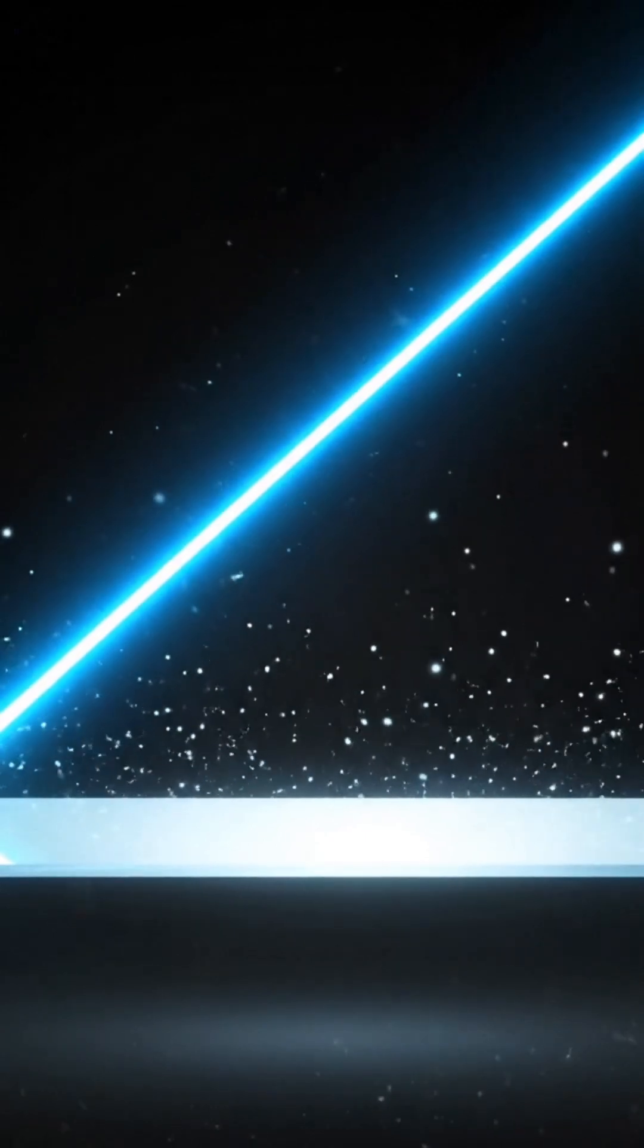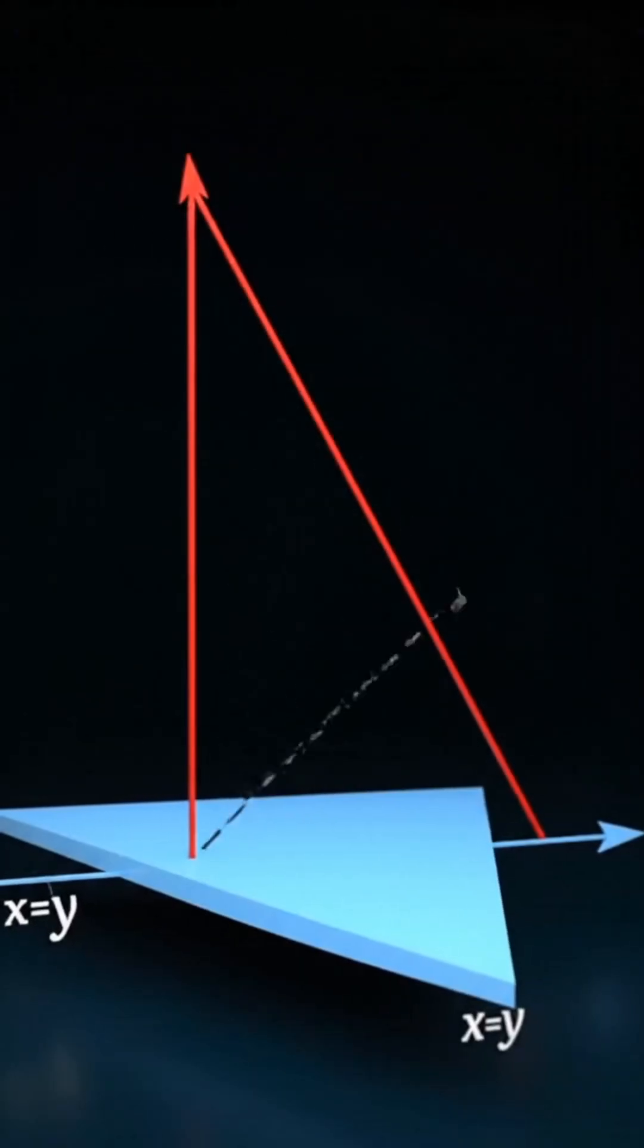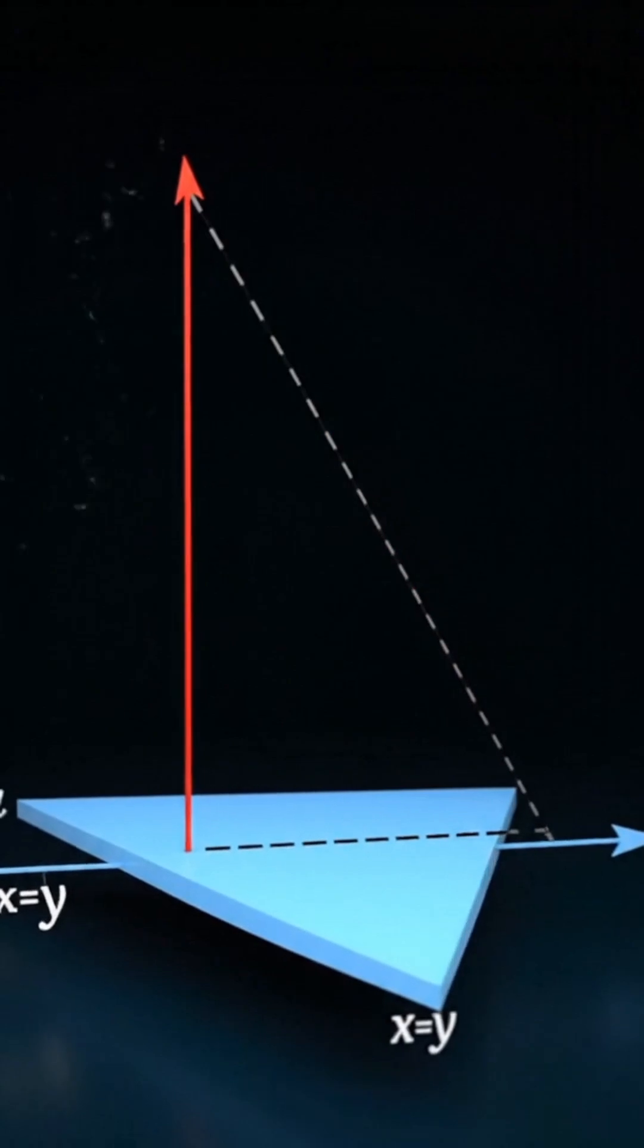To project a vector, we need a surface direction. Orthogonal projection means dropping a perpendicular from the vector to the plane.